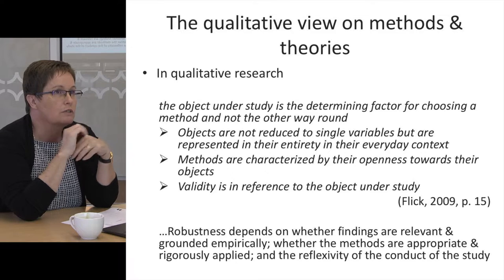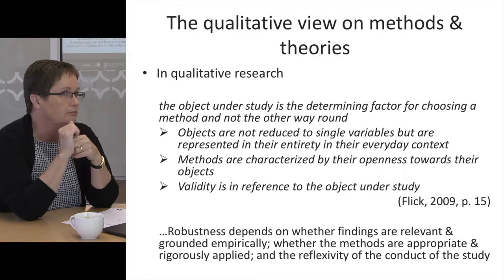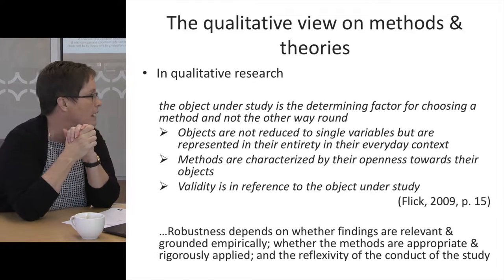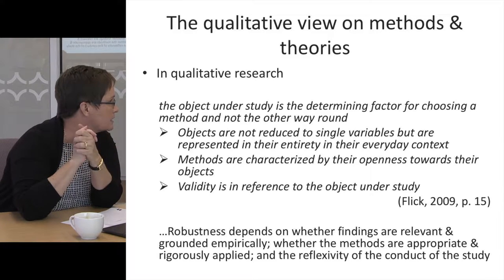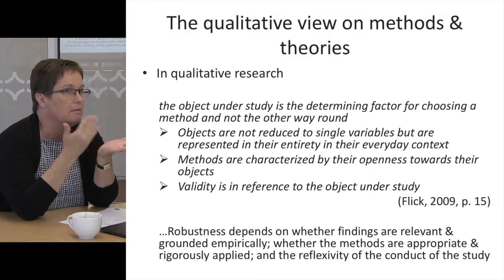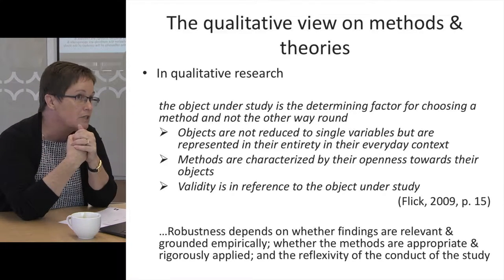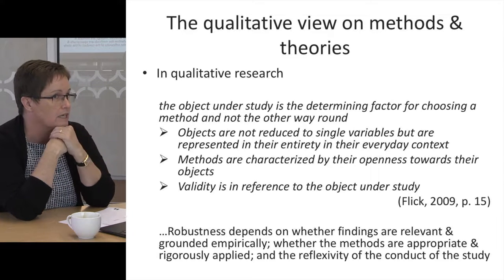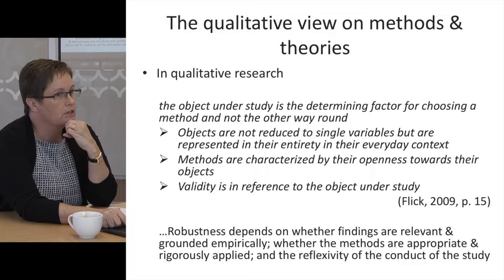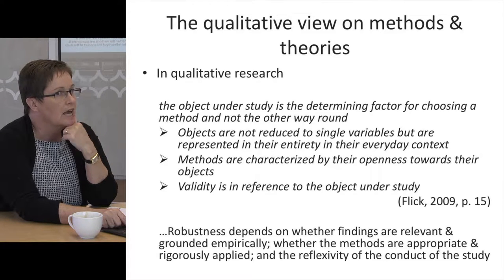Flick also talked about the object being the determining factor for choosing a method — they're not reduced to single variables. This is when we're moving out of a positivist frame. Methods are characterised by their openness towards objects, and validity is in reference to the object under study. We work from this perspective with interactional ethnography, thinking about robustness in terms of empirical grounding, appropriate methods and reflexivity.